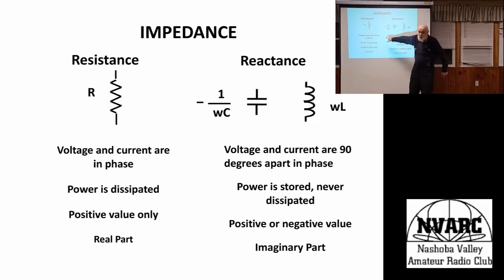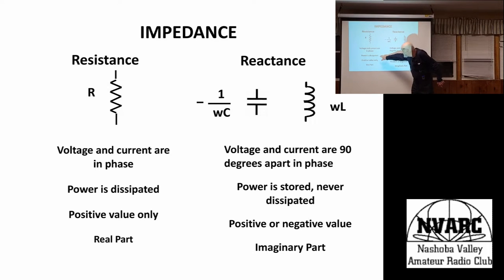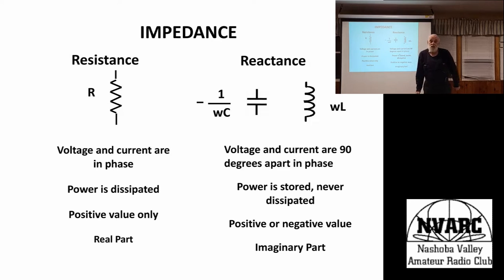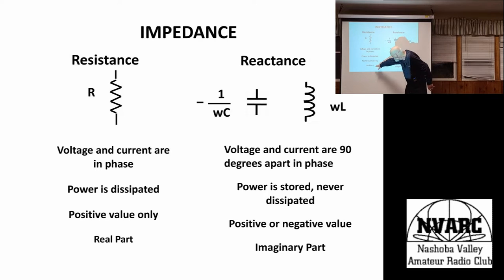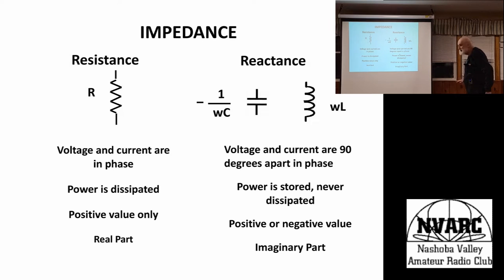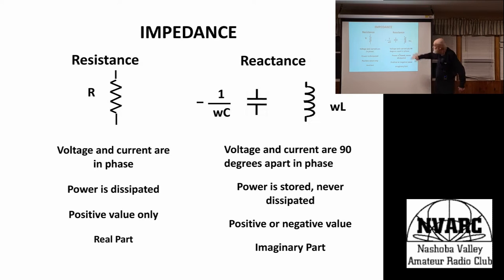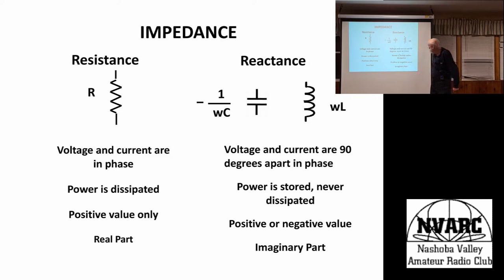With resistance, voltage and current are in phase, power is dissipated, and it can only be positive. People who've done a lot of work in this area will call it the 'real part' — don't worry about why, but you'll know what I mean. We have exactly two kinds of reactance: the inductor and the capacitor.